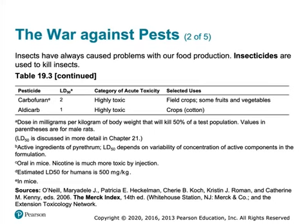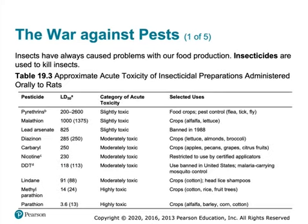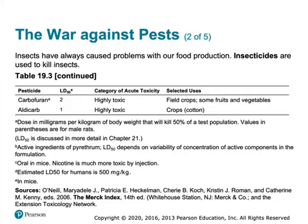When you see LD50s, that stands for lethal dose 50 — the amount that will kill 50% of the population, tested on rats. Generally speaking, the lower the number, the higher the toxicity. The pyrethrins, for instance, have an LD50 as high as 2,500–2,600 — that's not that toxic. But an LD50 of one is very highly toxic.